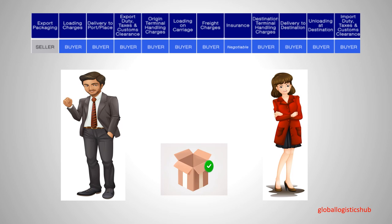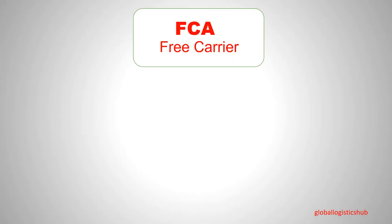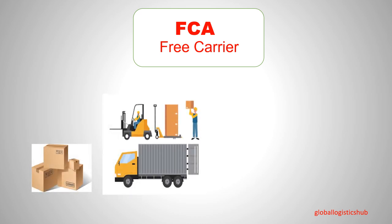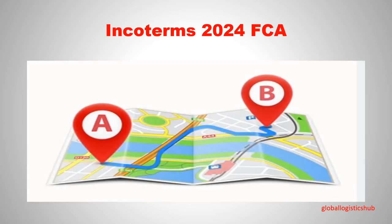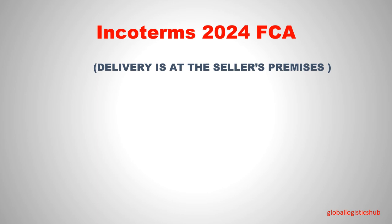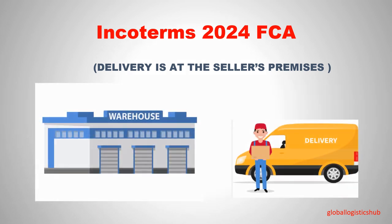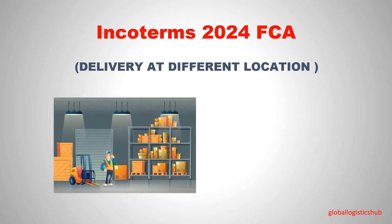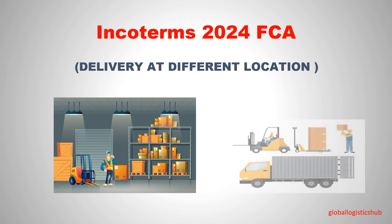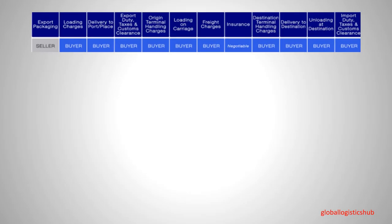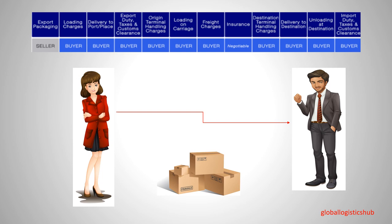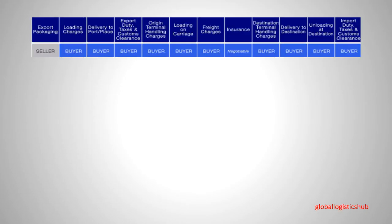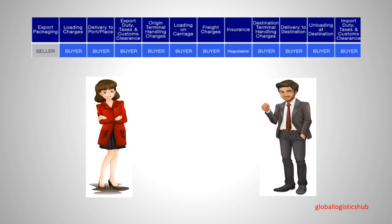Incoterm number two is FCA, which means Free Carrier. In FCA, the seller is responsible for export clearance and the delivery of goods to the carrier at the named place of delivery. Incoterms 2024 FCA has two possible delivery locations: if the place of delivery is at the seller's premises, the seller must load the goods; if delivery takes place at a different location, the seller is not responsible for unloading. When goods have been delivered to the selected location, the risk transfers to the buyer. The buyer is responsible for paying the price of goods and transportation fees from the seller's place to the buyer's selected place. In FCA, it becomes the buyer's responsibility to determine whether to obtain an insurance policy.